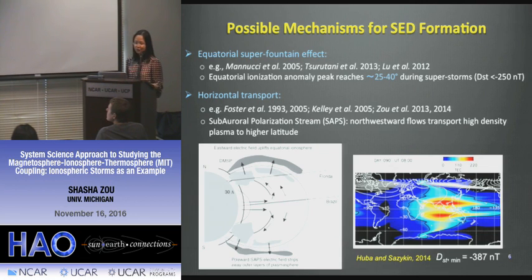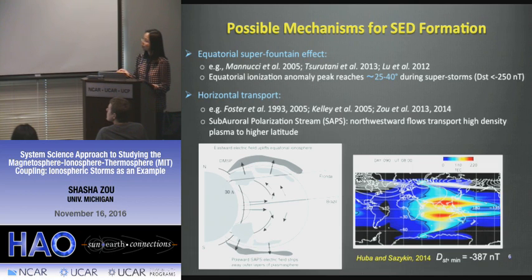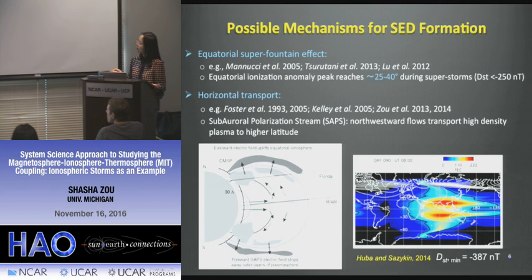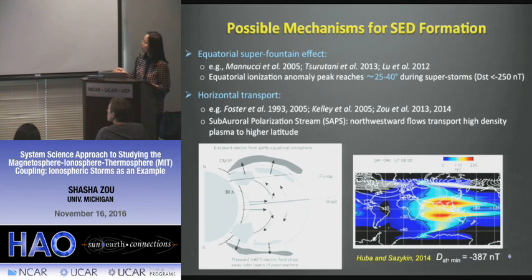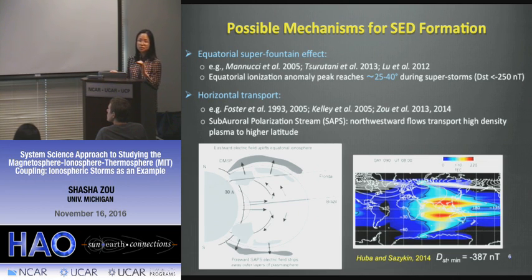Several mechanisms have been proposed for SED formation. One popular mechanism is the super fountain effect: plasma in the equatorial region is lifted to higher altitude, diffuses along the magnetic field to higher latitudes (reaching perhaps Florida), and is then carried by convection patterns extended to low latitudes during strong driving conditions, transporting plasma to high-latitude regions. A nice simulation result from a coupled SAMI and RCM simulation shows this plume extending to higher latitudes into the polar cap. For the specific storm studied, the Dst minimum reached nearly minus 409 nT — super-storm category.